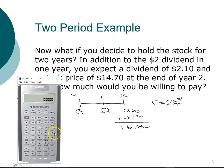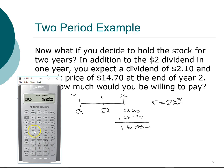Using the cash flow register, we clear all work first. Cash flow in year one is two dollars. Cash flow in year two is sixteen dollars and eighty cents — the combined total of the dividend and the selling price. We enter the sum in year two as one amount. Setting the interest rate to twenty percent, we compute NPV and get a present value of thirteen dollars and thirty-three cents.